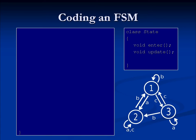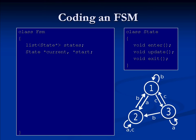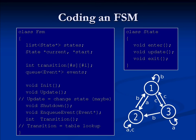You'll notice that there are a few distinct functions: Init, Update, and Shutdown. All of these are in most machines. Plus, you'll notice that we have a queue for the incoming events. These events will be fed to your transition table to figure out what transition you should take during the state machine's update.